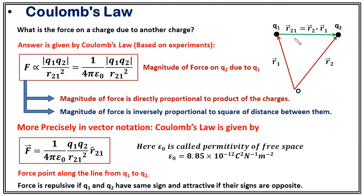From the vectorial notation, it is clear that the force is repulsive if q1 and q2 have the same sign, and attractive if they have opposite signs. In simple language: same charges repel each other and opposite charges attract each other. Two positively charged bodies repel, two negatively charged bodies also repel, and one positive with one negative will attract.